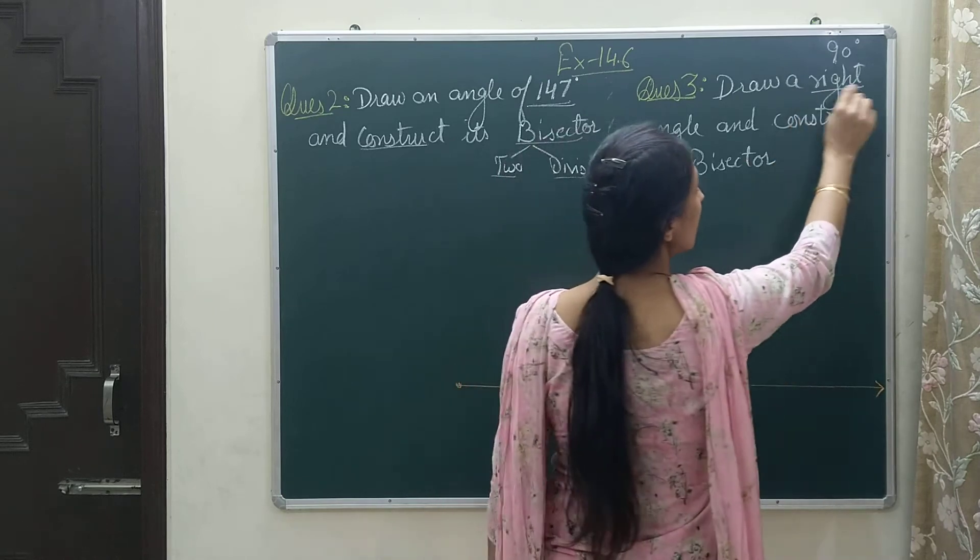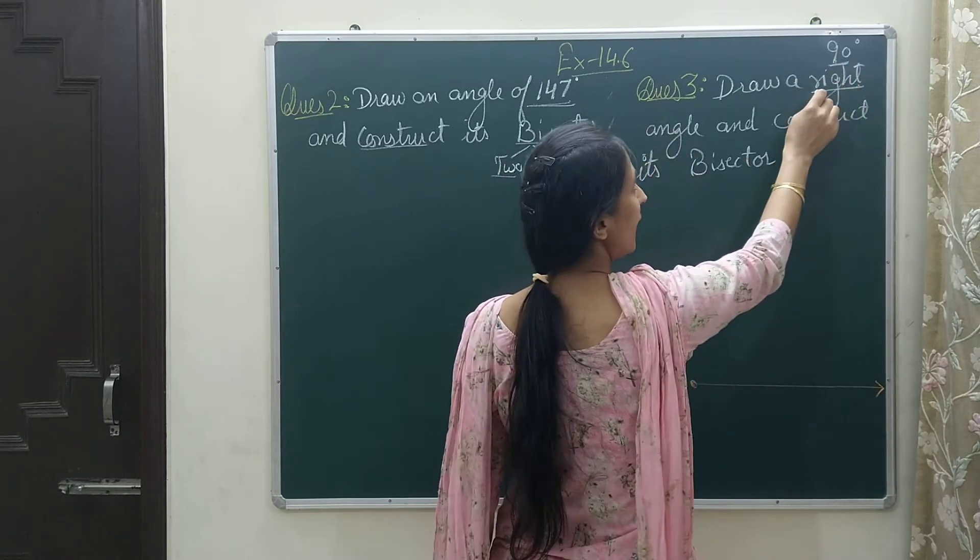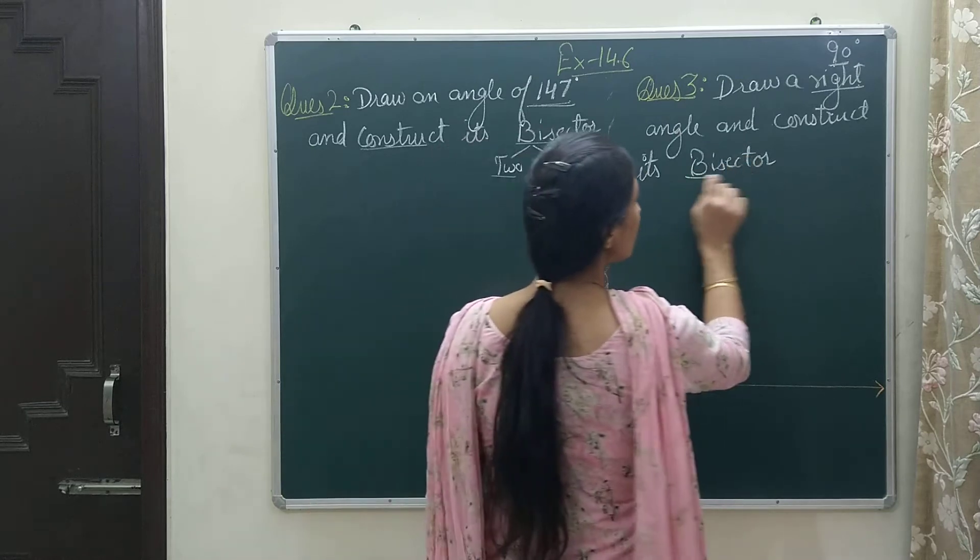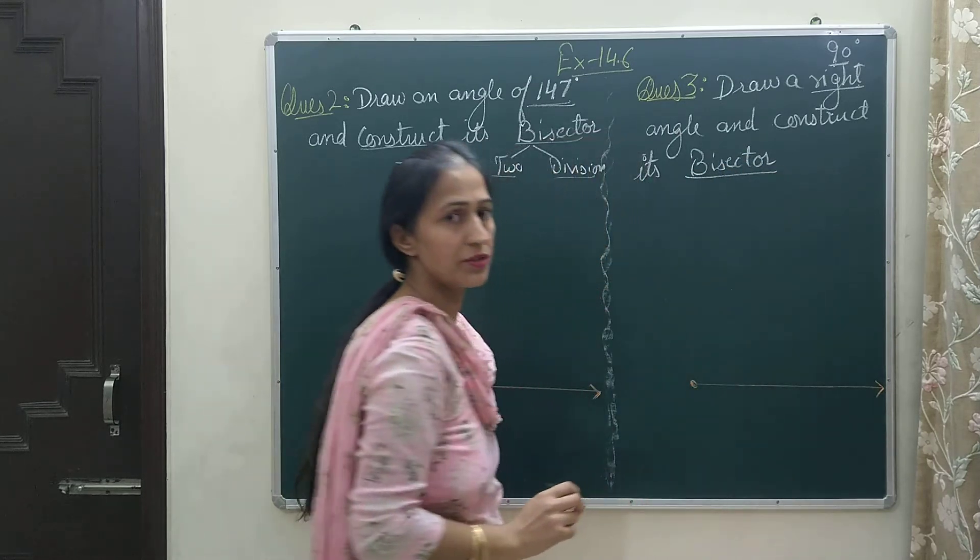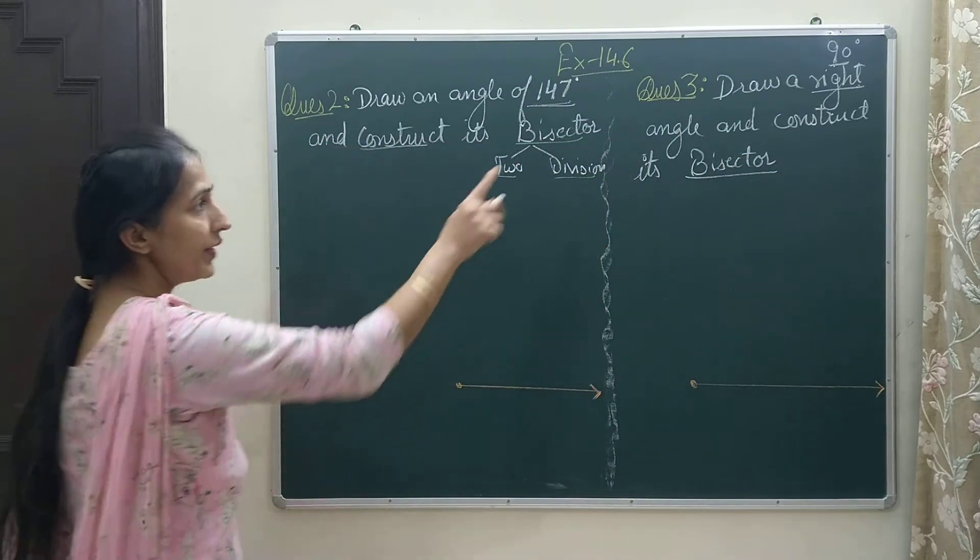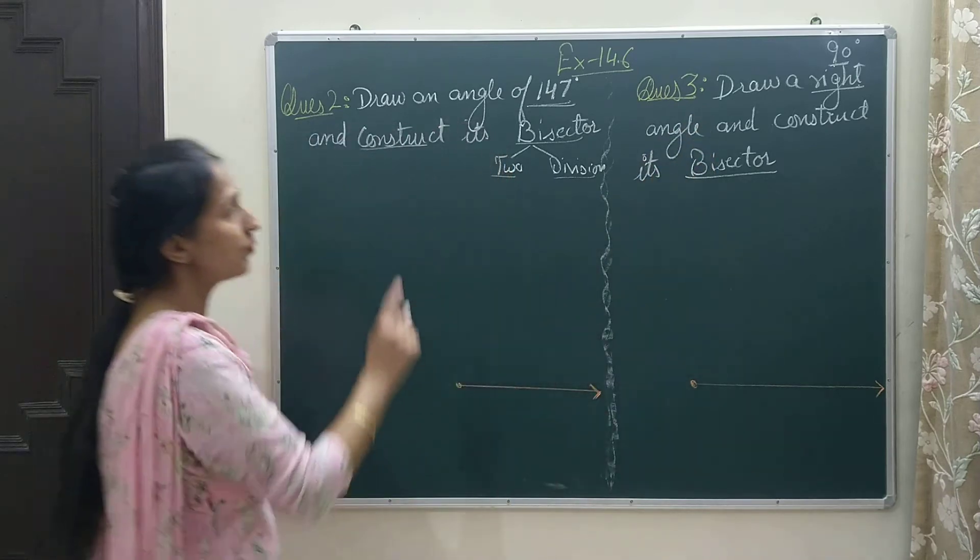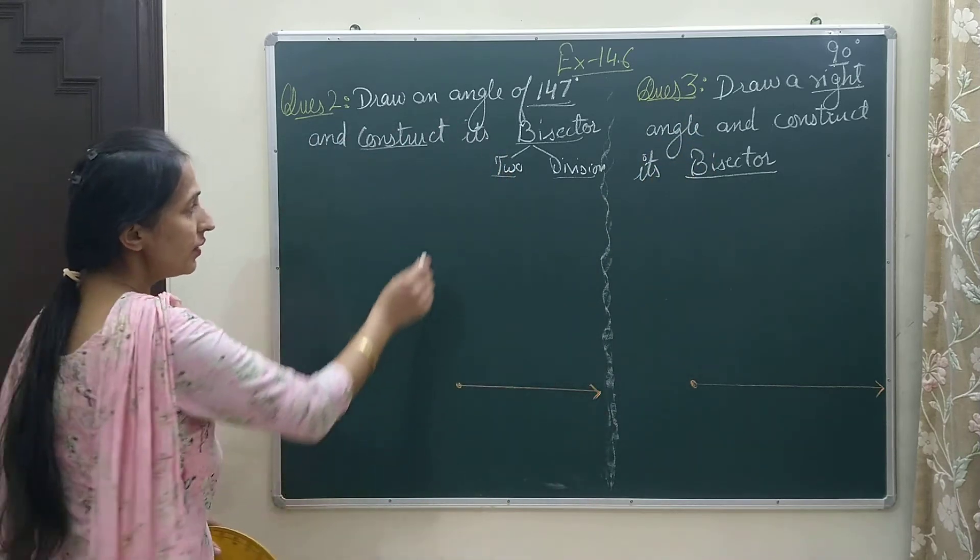I have to draw its bisector, so I will divide 90 degrees into two parts. Both questions are quite similar, as you can see.